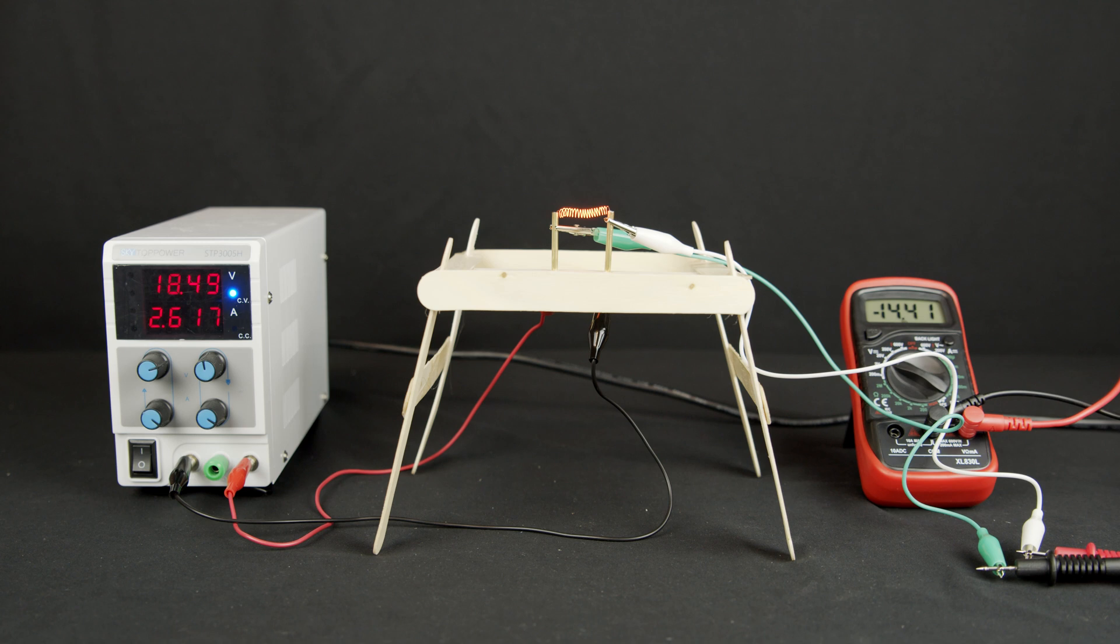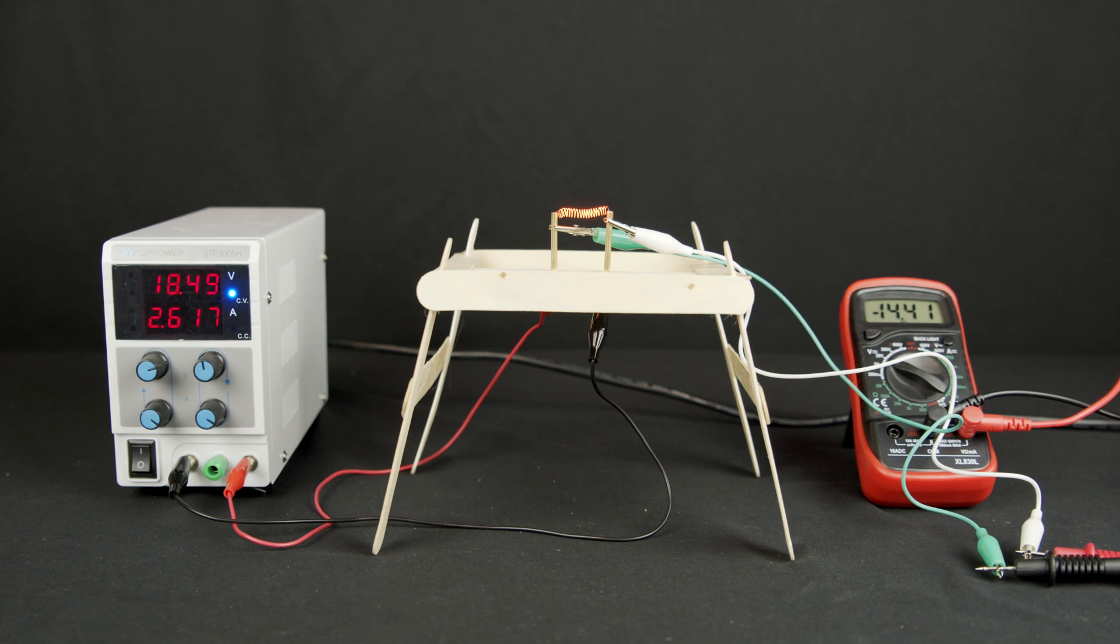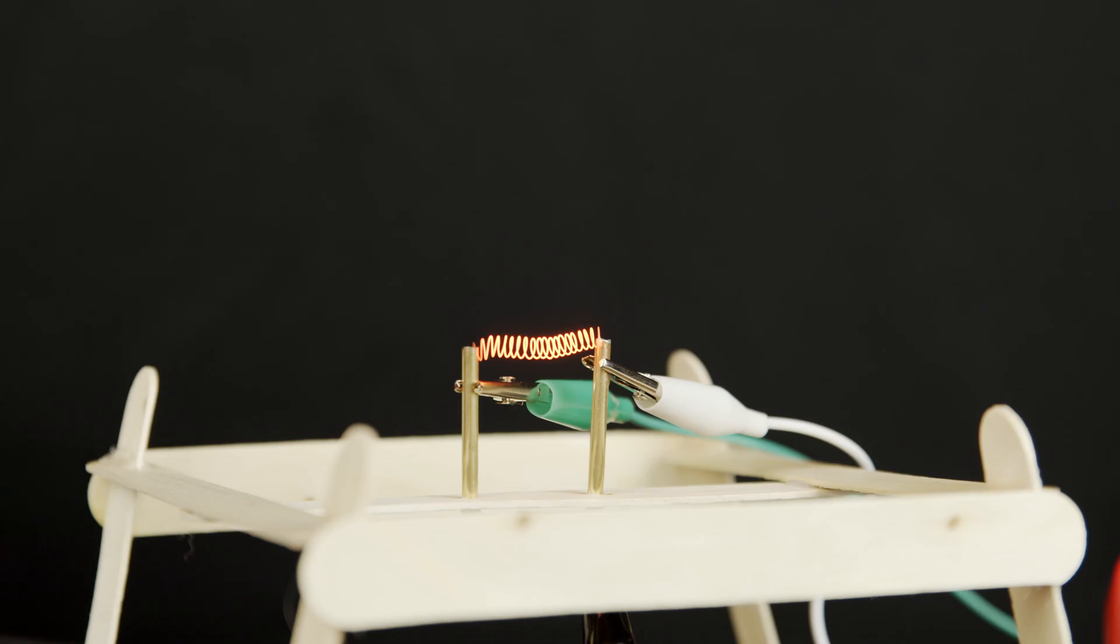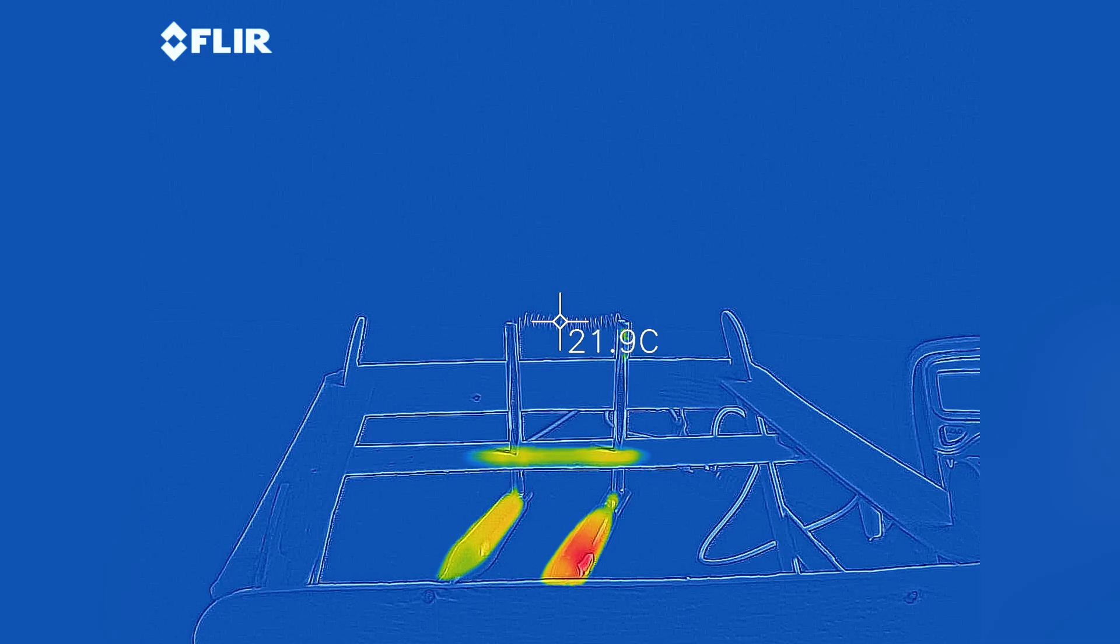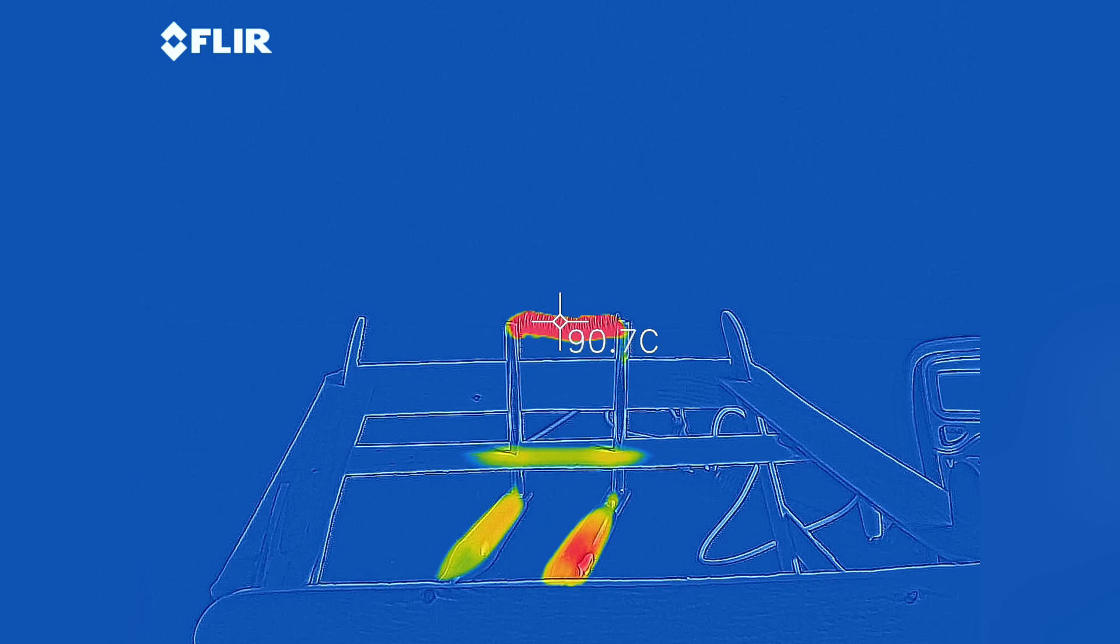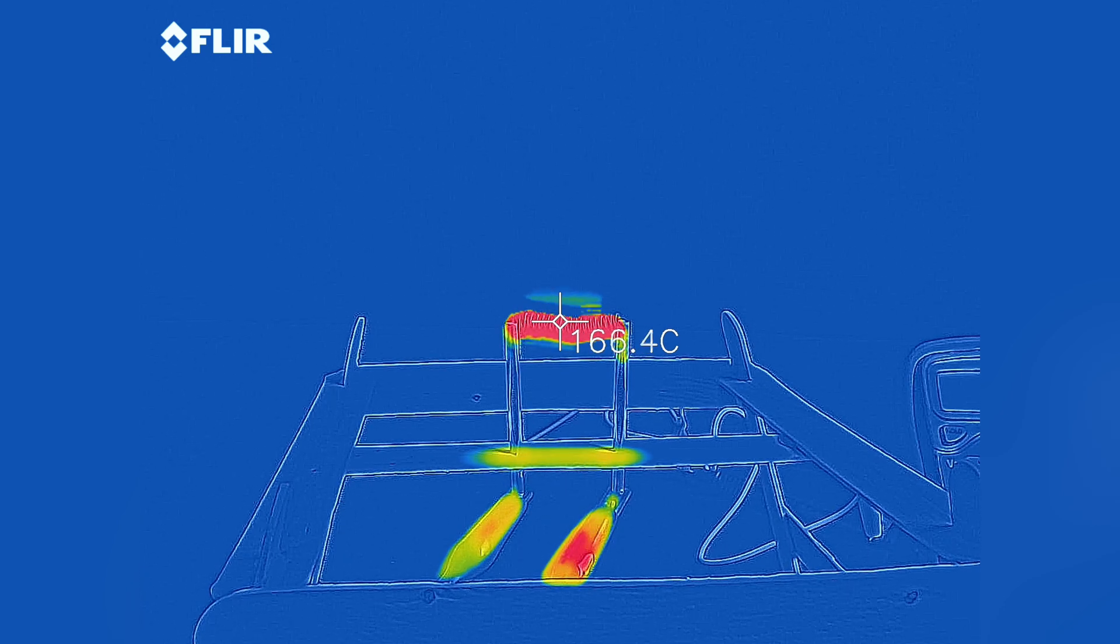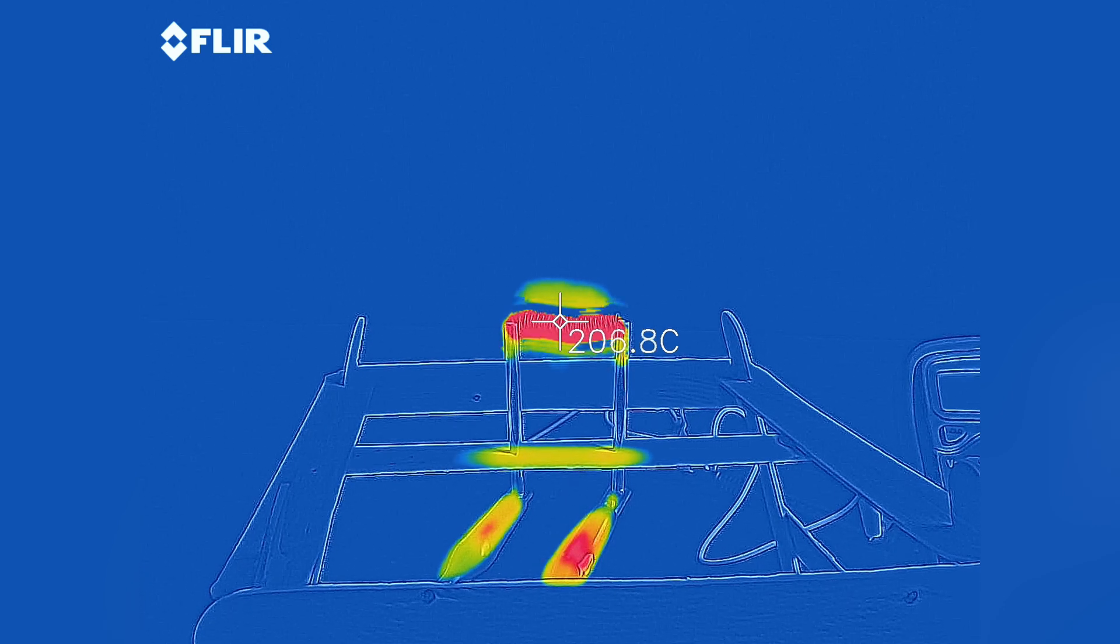To measure the voltage across the coil, I connected a multimeter in parallel with this coil, making sure that the test leads are as close to the coil as possible to minimize the voltage drop across the brass tubes. From the current reading of the power supply and the voltage reading from the multimeter, I can determine the power draw of the coil and the resistance of this coil.